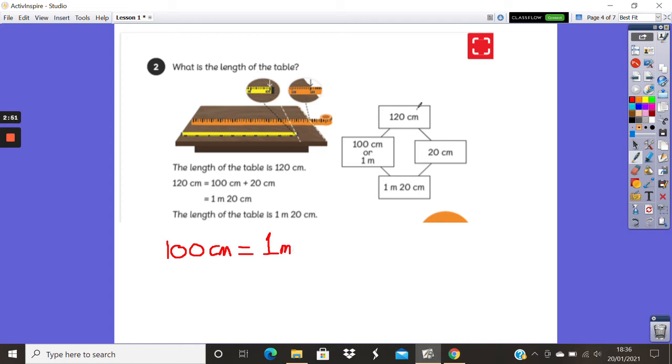So in your workbook, you will have a section that looks like this. And it's just where we partition it. So we start with 120 centimeters and then we're going to convert it. So we've got 100 centimeters or 1 meter because they're the same. And then we've got 20 centimeters, which would mean that in total, the length of the table is 1 meter 20 centimeters.